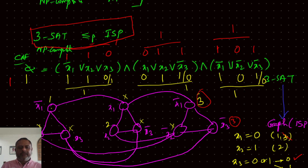How much time is required to write this graph? Definitely not exponential — it takes polynomial time. Solving the independent set problem itself may take exponential time, but if we identify n independent nodes, substituting them back solves the 3SAT problem too. Therefore, solving the independent set problem is equivalent to solving the 3SAT problem.